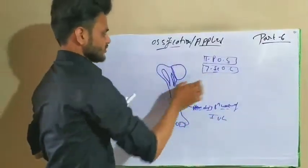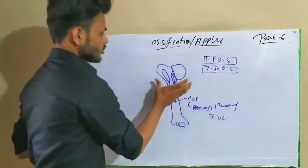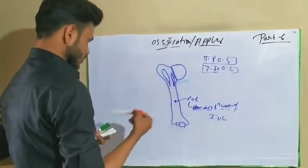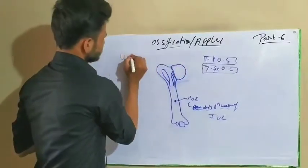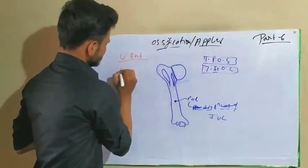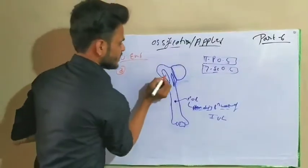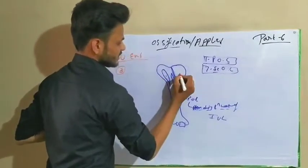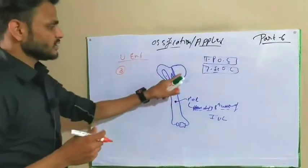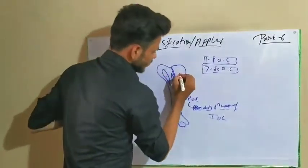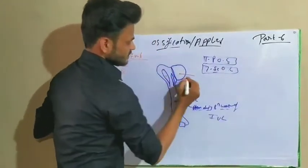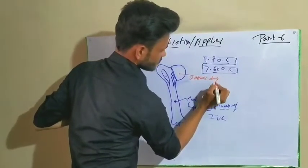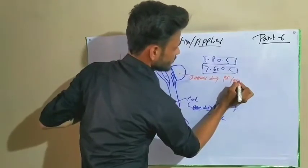There are seven secondary ossification centers in the humerus. On the upper end, the upper epiphysis has three secondary ossification centers: one on the greater tubercle, one on the lesser tubercle, and one on the head of the humerus. The ossification center on the head of the humerus appears during the first year of life.